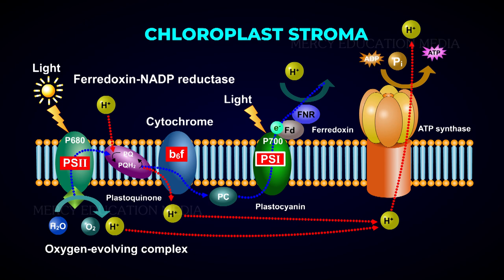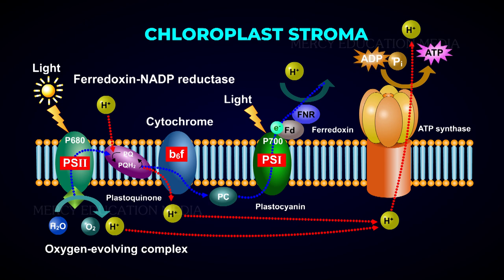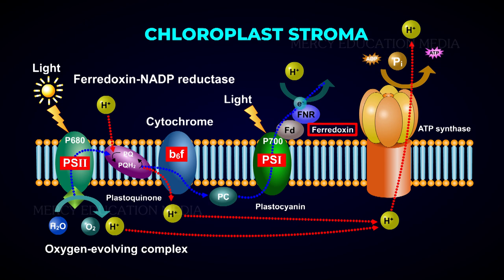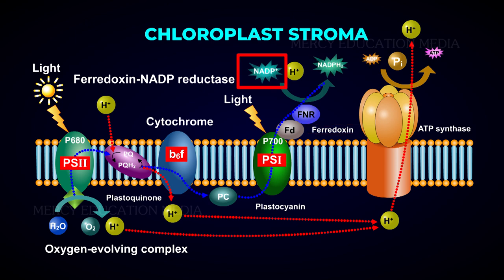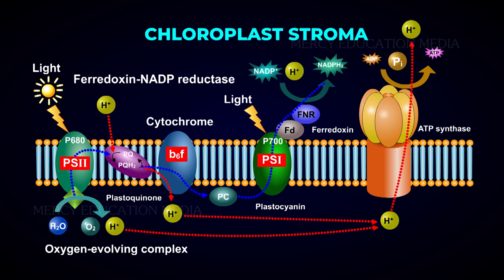The electrons released to PS1 are transported through the electron transport chain of ferredoxin reducing substrate, ferredoxin, and ferredoxin NADP reductase to reduce NADP+ to NADPH2.